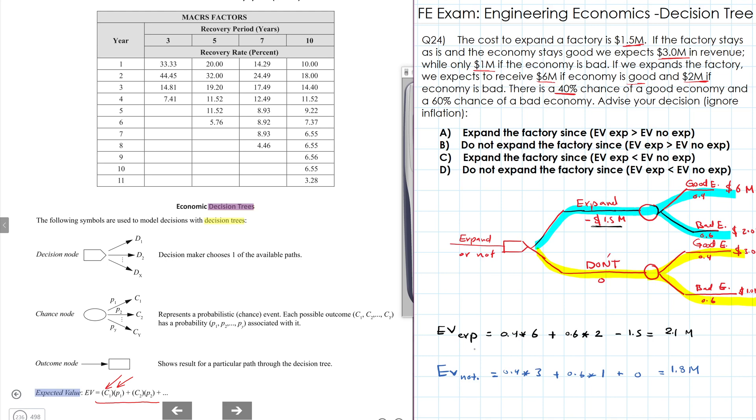And since the expected value of expanding the factory is higher than the expected value of keeping the factory as is, then we choose to expand the factory. So we have option A and option C. And the expected value for expanding is larger than the expected value for not expanding. So it's A.